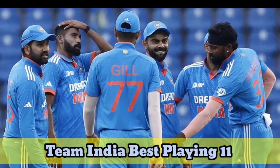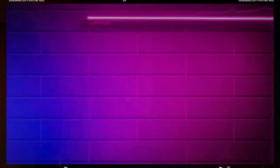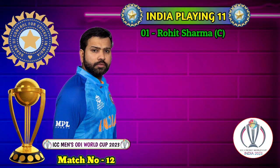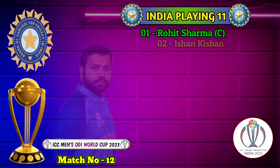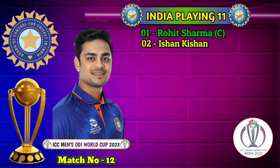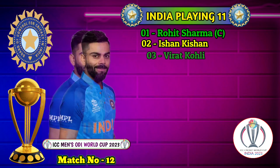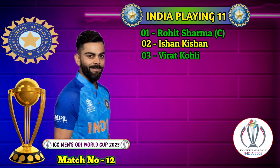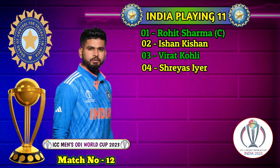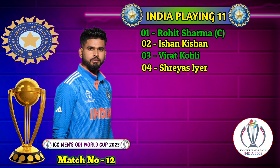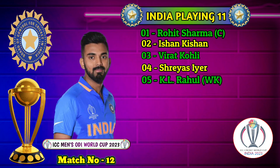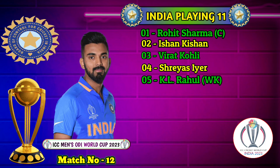Team India Best Playing 11. No. 1: Rohit Sharma, Captain and Right Hand Batsman. No. 2: Ishan Kishan, Left Hand Batsman. No. 3: Virat Kohli, Right Hand Batsman. No. 4: Shreyas Iyer, Right Hand Batsman. No. 5: KL Rahul, Wicketkeeper Batsman.